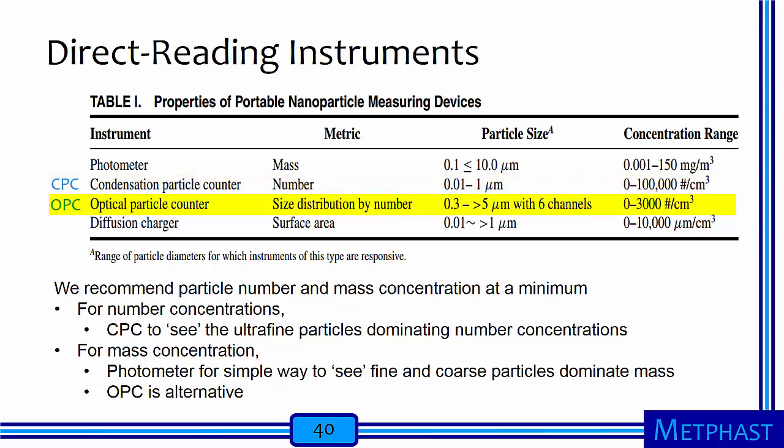The optical particle counter yields a size distribution by number from approximately 300 nanometers to about 5 micrometers in different numbers of size bins; typically, lower cost units have 6 size bins. The concentration range is much lower than for the CPC, but this device cannot see nanoparticles that have the highest number concentrations. Lastly, diffusion chargers provide a direct output of surface area concentration of sub-micrometer particles, though these instruments are uncommon in today's industrial hygiene practice. We emphasize the use of instruments that provide the ability to see particles across a wide range of multiple metrics. The condensation particle counter provides the ability to see ultrafine particles dominating number concentrations, while a photometer is a simple way to account for fine and coarse particles dominating mass concentrations.